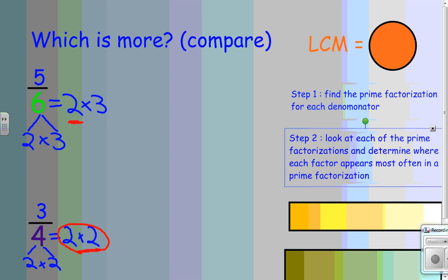I'm going to look at the other factor. There is a three in the prime factorization of six, and there are no other threes. So, it appears the most in this one, and I will circle it.